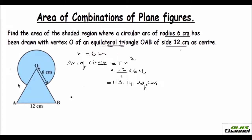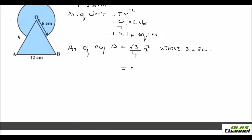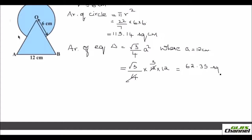Now I find the area of the equilateral triangle. The formula is √3/4 × a². The side a is given as 12 cm, so that is √3/4 × 12 × 12, which simplifies to 36√3, giving 62.35 square cm.